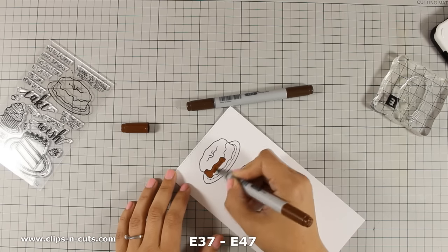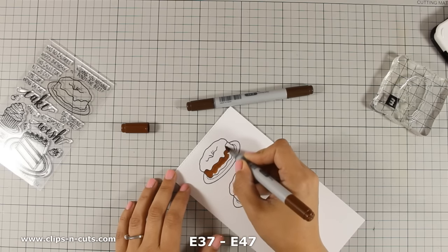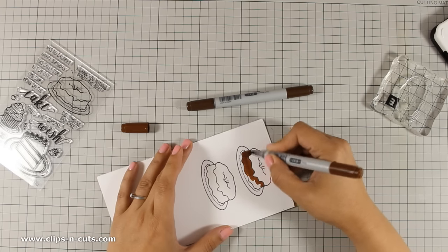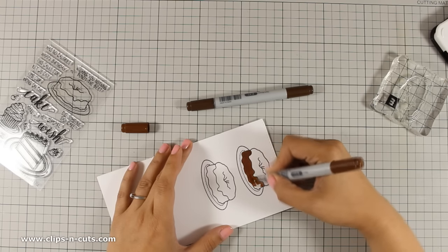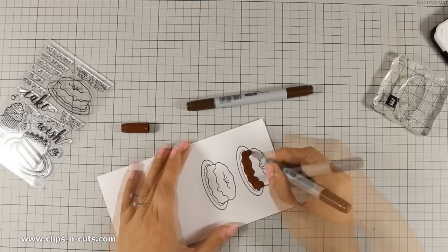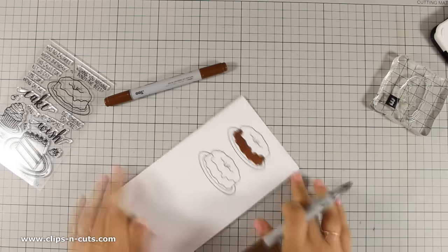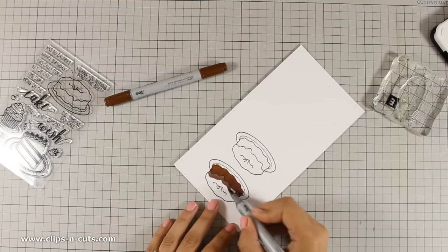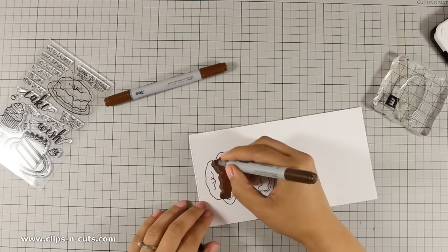But first I am going to color the main part of the cake. I like chocolate so I just had to color my cake brown. I am using only two colors of brown and I don't care if I go outside the lines since I will be using my scissors to cut out this part of the cake.